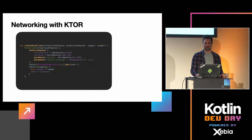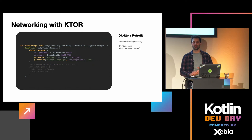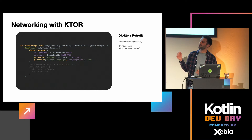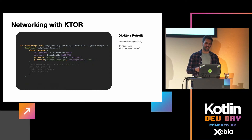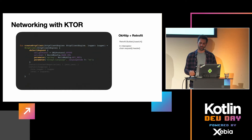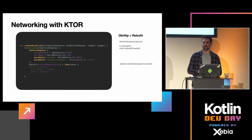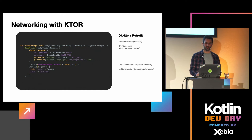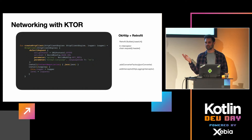Here is an example. When you think about OkHttp and Retrofit, you probably create a Retrofit builder, add a base URL, and add an interceptor for headers. The equivalent in Ktor is creating an HTTP client with an HTTP client engine — which I'll cover next. To add headers or URL properties, you use parameters like URL protocol and host. For JSON conversion, instead of adding a converter factory, you install a plugin called ContentNegotiation and declare what you want to convert. You can also install a logging plugin, similar to adding a logging interceptor in OkHttp.